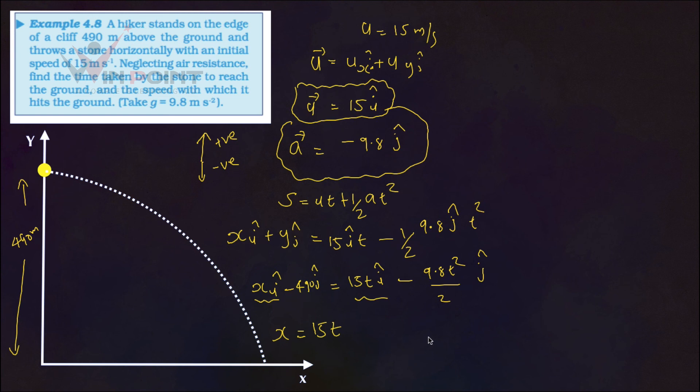Here, we can write 490 equals 9.8 T square by 2. From here, we can find the value of T.